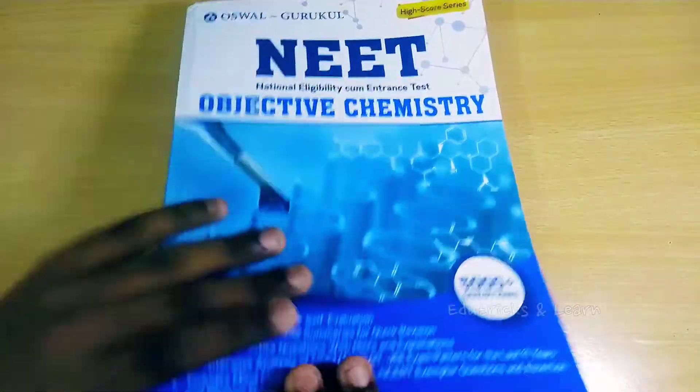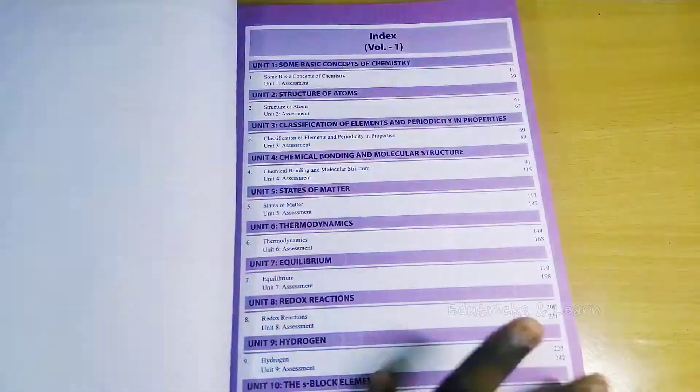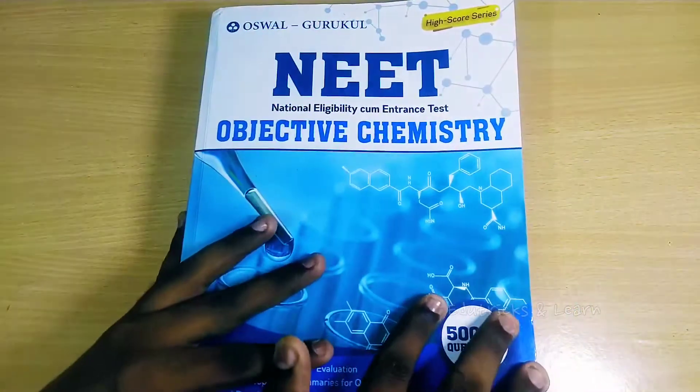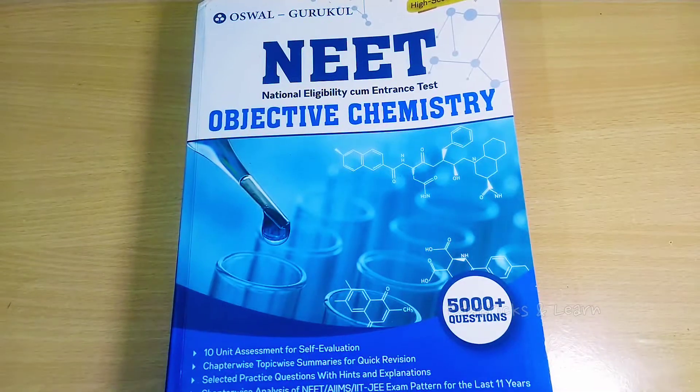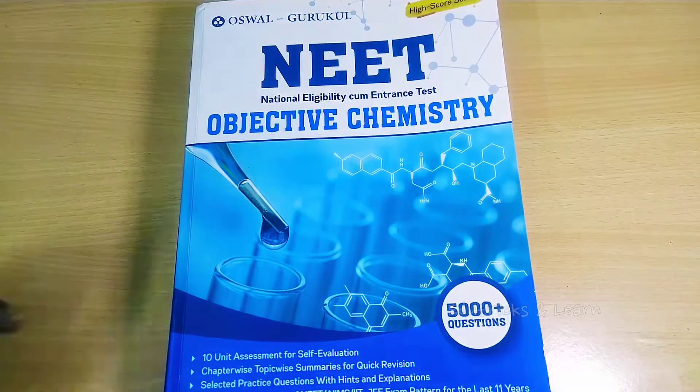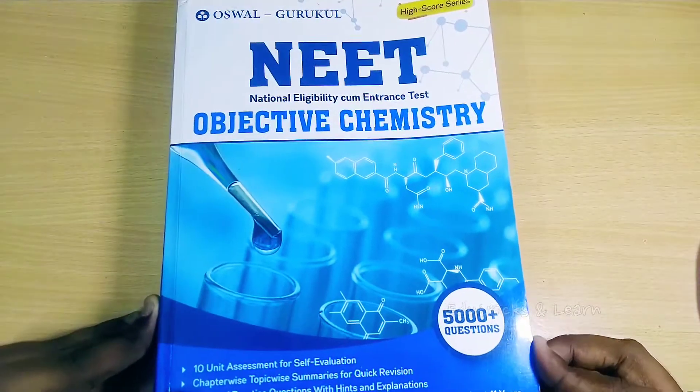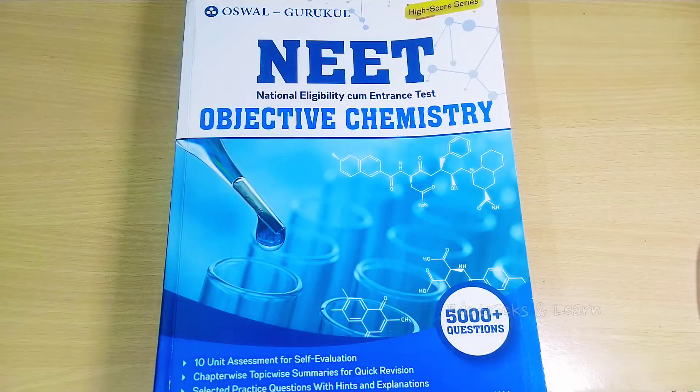That's all about this Oswal Gurukul objective chemistry. If you want to buy this book, the link is given in the description box. You can also buy on Amazon or Flipkart. In the next video, we're going to see the Oswal Gurukul objective physics. So stay connected. Until then, tata bye-bye from Arudrips and Lanna Yeppan. Thank you.